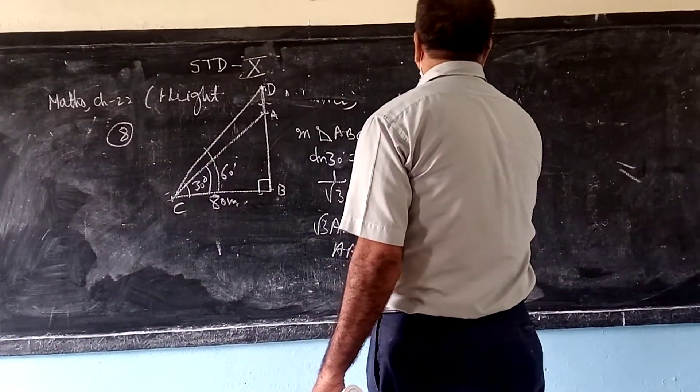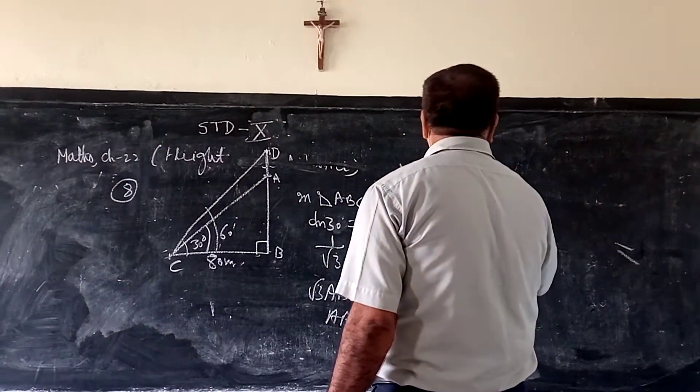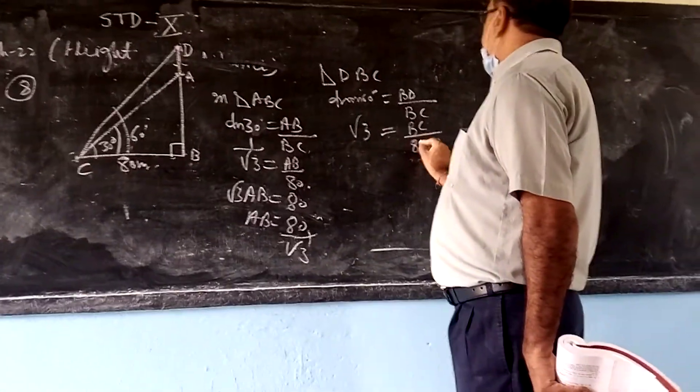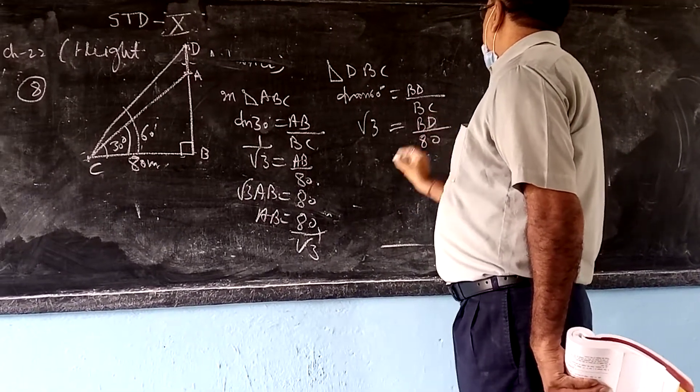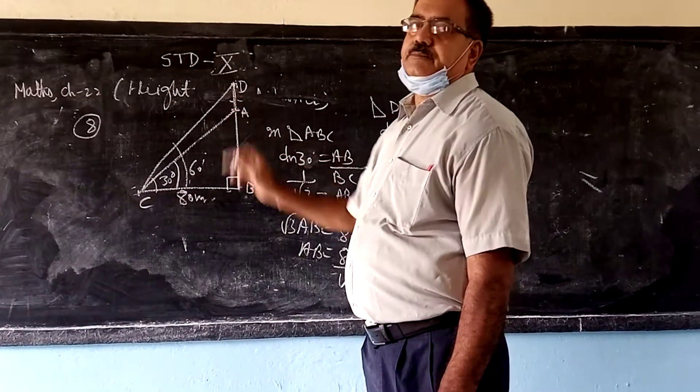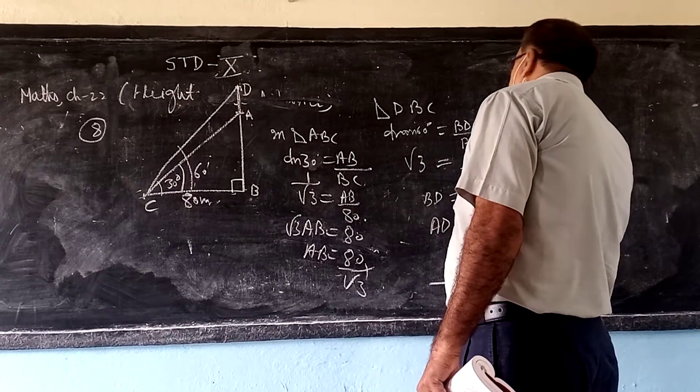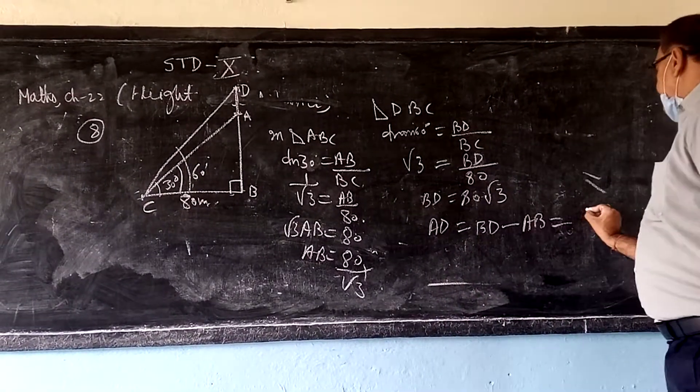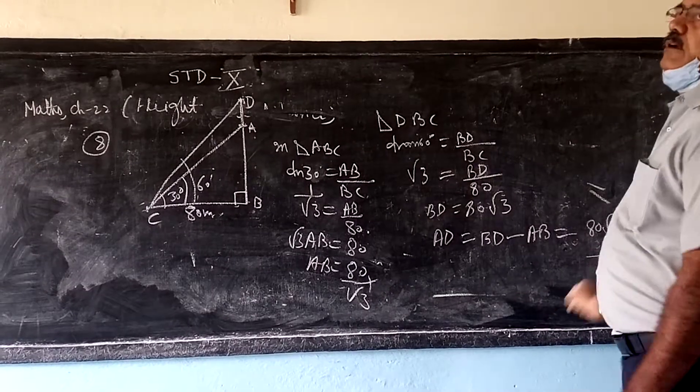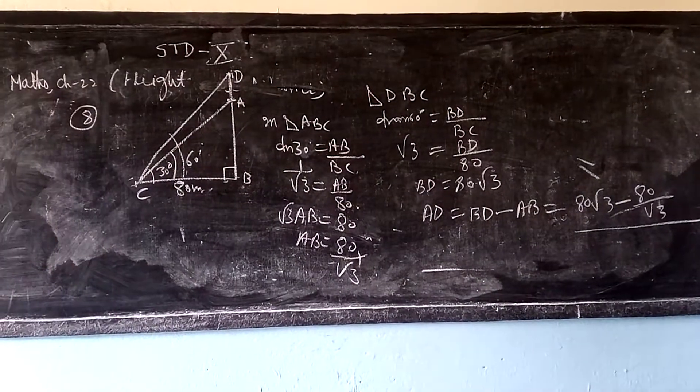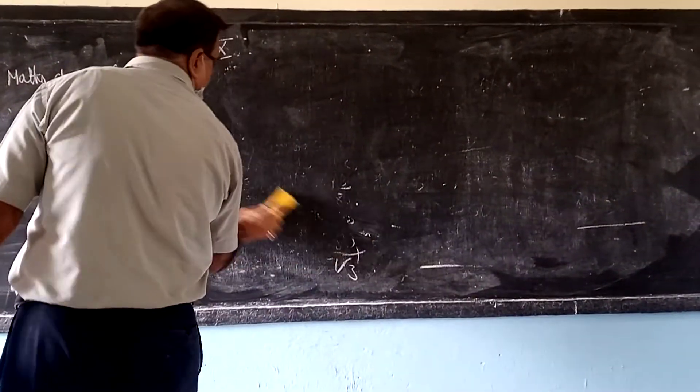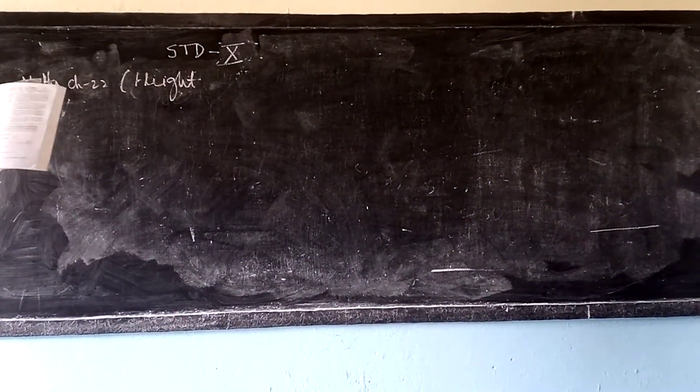Now tan 60 degree equals DB by BC. DB equals 80 root 3. But we have to find AD. So to get AD we can write DB minus AB. DB is 80 root 3 and AB is 80 by root 3. Calculate this, this will give you how much height AD.